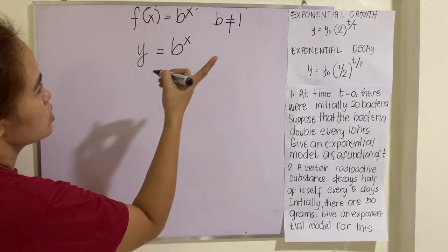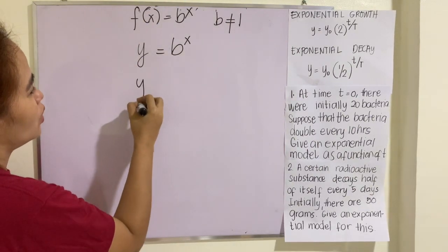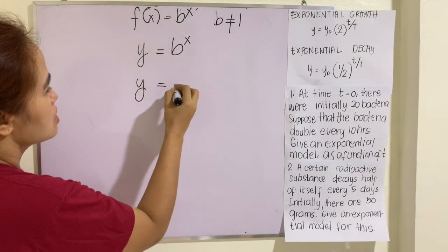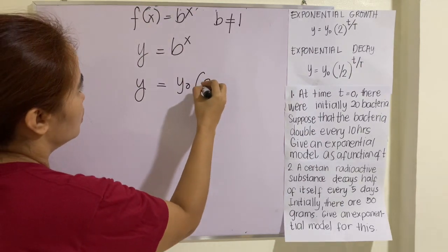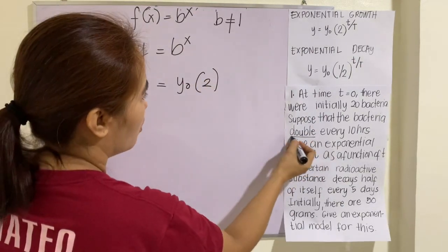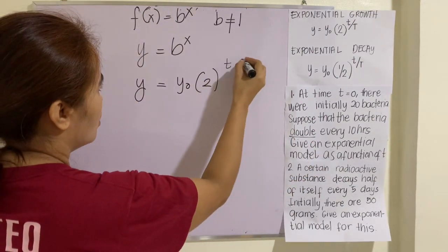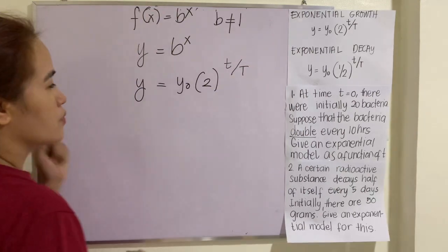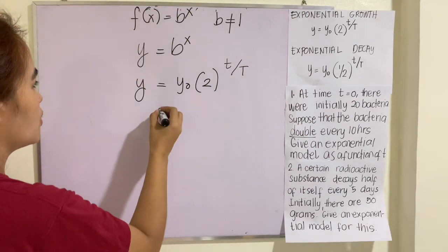So therefore, we will be using the first one, exponential growth. So this is y equals y sub 0, 2, because it says here double, and then T over big T. So your initial number of bacteria here is 20.